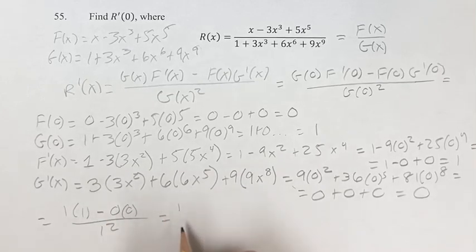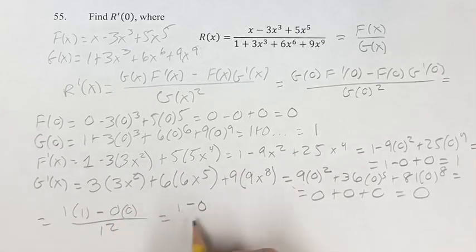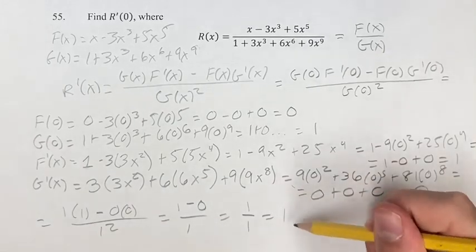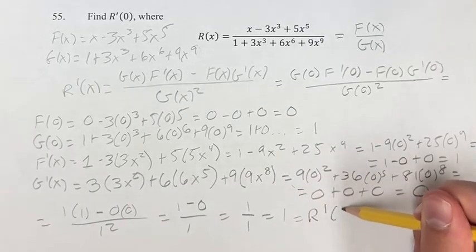So you have 1 times 1 is 1, minus 0 times 0 is 0, over 1 squared is 1, so this is 1 over 1, which is 1, and this is equal to R prime of 0.